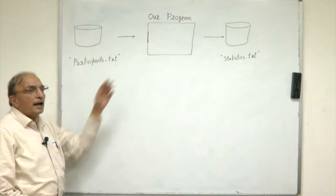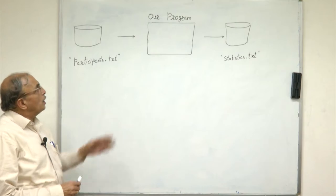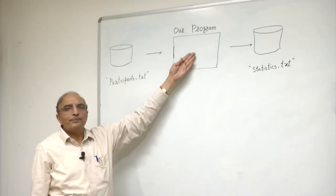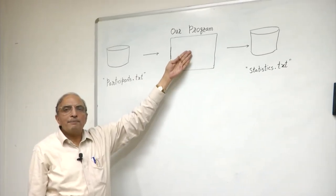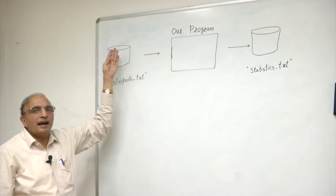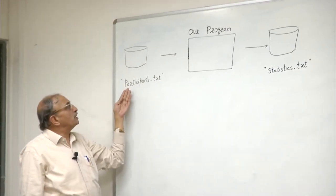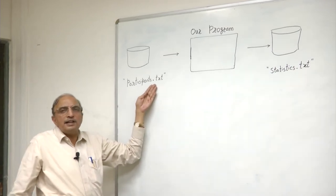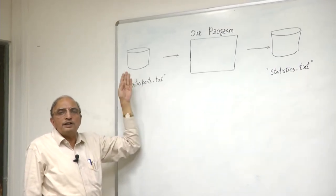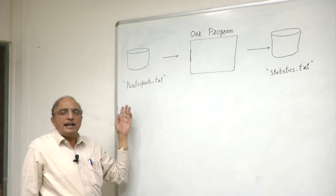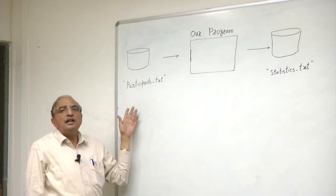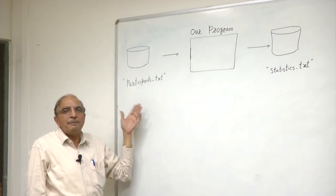Here is the basic block diagram of what we wish to do. We have our program here. We wish this program to read data from a file. As an example, I have taken a file known as participants.txt, which is an external text file stored on the disk. It contains data about names of participants, the marks scored by them in an exam, etcetera.